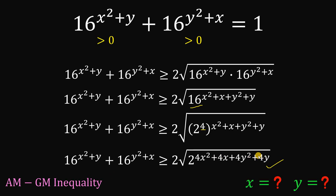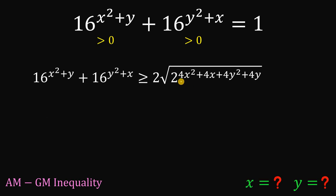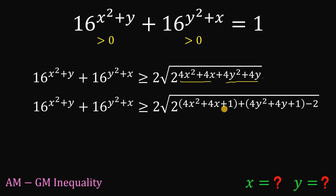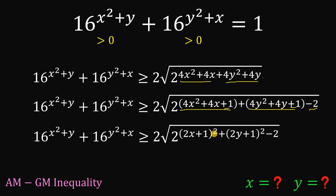Alright, now let's focus on this result. Notice that we have 4x squared plus 4x and 4y squared plus 4y. If we add 1 to each, they become perfect square trinomials. So let's add 1 to these two terms and add 1 to these two terms, then subtract 2 — since 1 plus 1 is 2, then minus 2, we add 0. We can rewrite the first group as (2x + 1) squared and the second group as (2y + 1) squared, then bring down the negative 2.